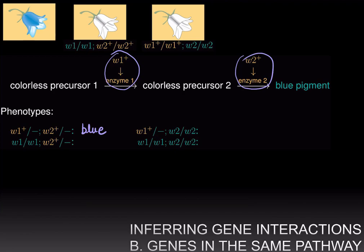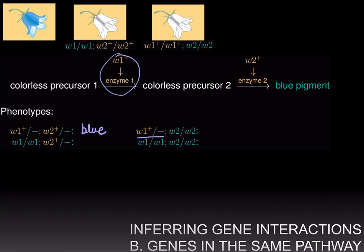On the other hand, if you have the dominant phenotype of the first gene — W1+/– — then you have at least one copy of enzyme 1, and so you will convert colorless precursor 1 into colorless precursor 2. However, if you are homozygous for the mutant allele of the second gene — W2/W2 — you do not have any wild type alleles to make enzyme 2. Therefore, colorless precursor 2 cannot get converted into blue pigment, and your phenotype is going to be white.